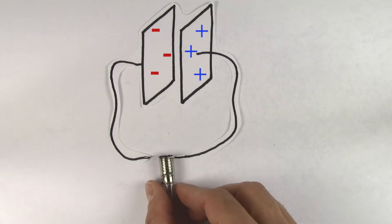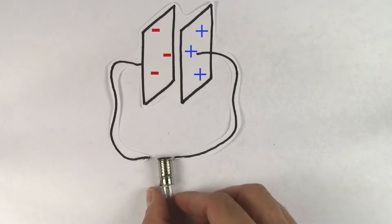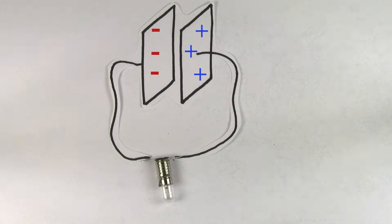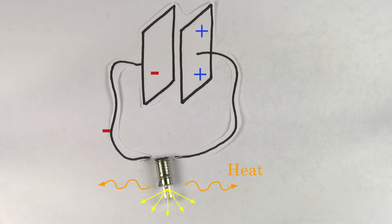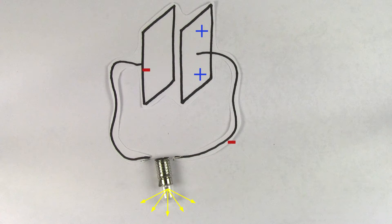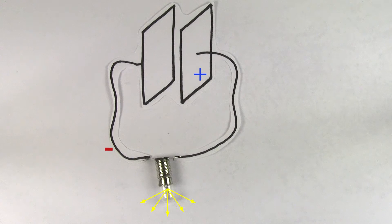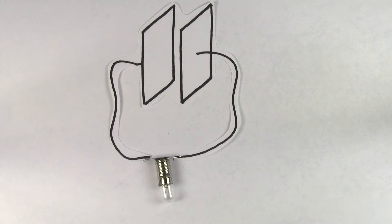So if you complete the circuit with some wires and a light bulb, current's going to flow, and the energy that was stored in the capacitor turns into light and heat that comes out of the light bulb. Once the capacitor discharges itself, and there's no more charges left to transfer, the process stops and the light goes out.